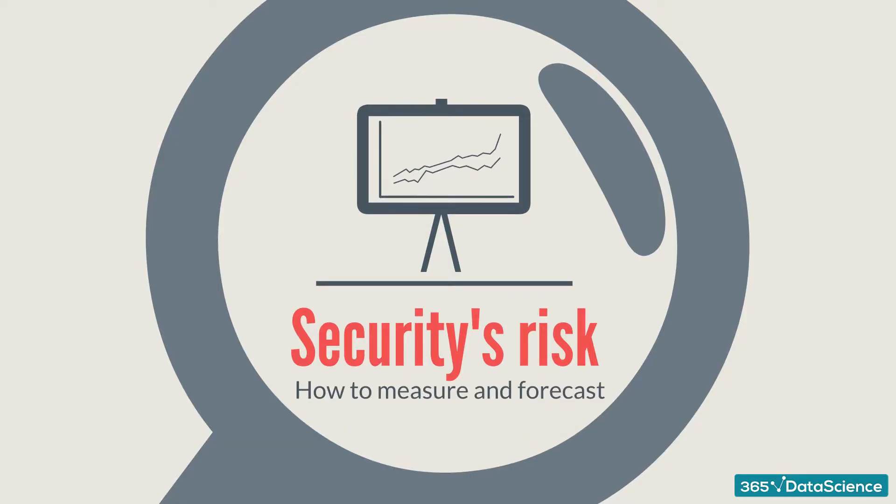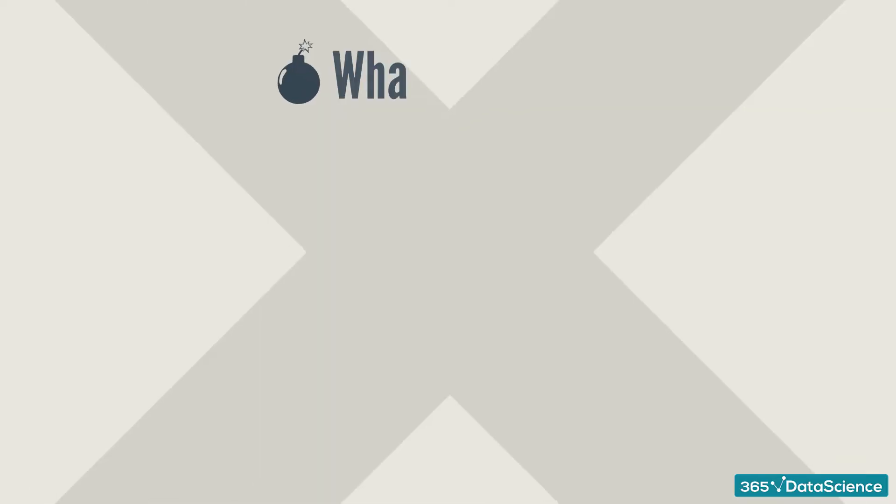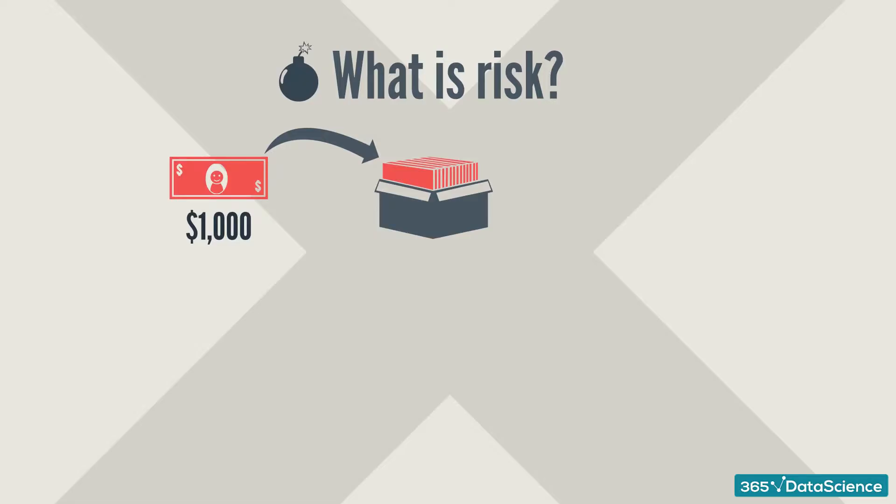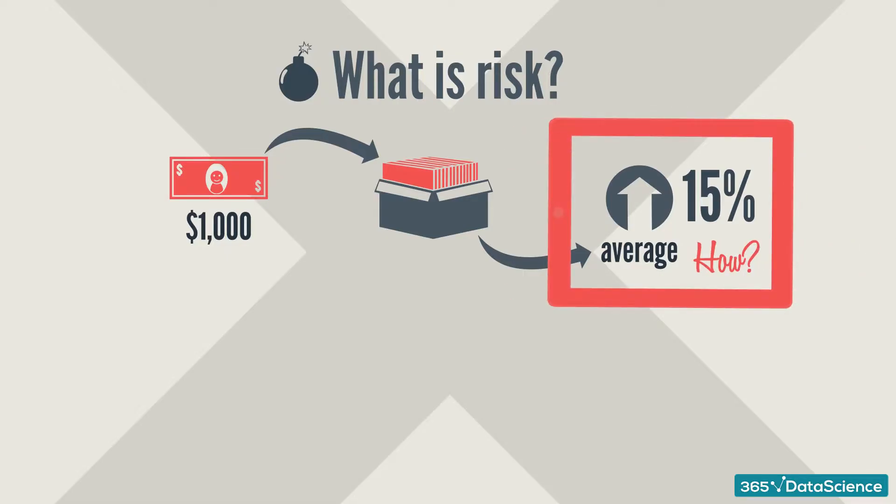How can we define risk for an investor? If you invest $1,000 of your money in a stock that's trading on the stock exchange and you know that on average this stock earned 15%, you would want to know how the average was made, right? Whether the stock earned 14% in one year, then 16% the next year, 13% the year after that, and 17% in the last year of historical observations.